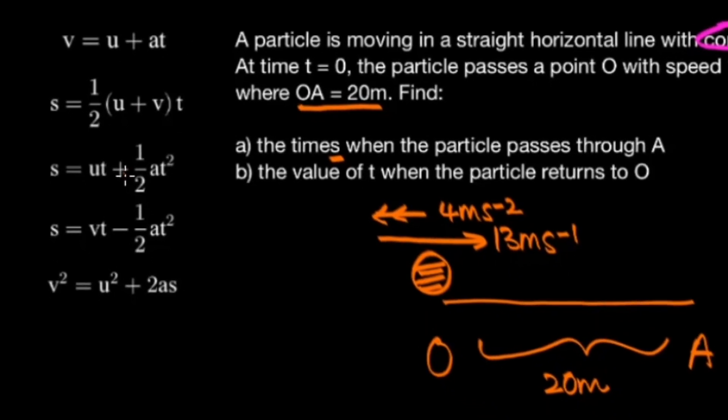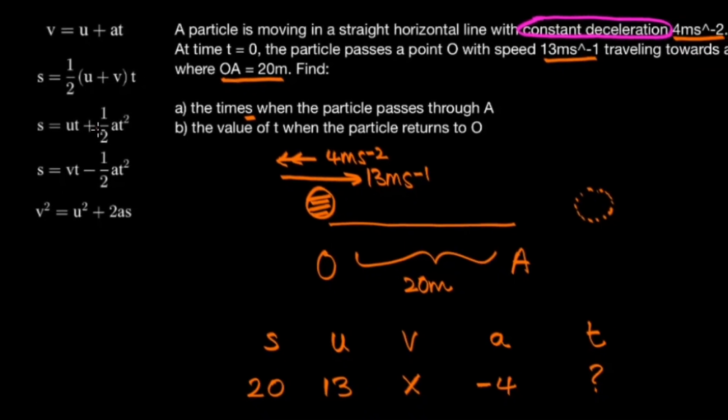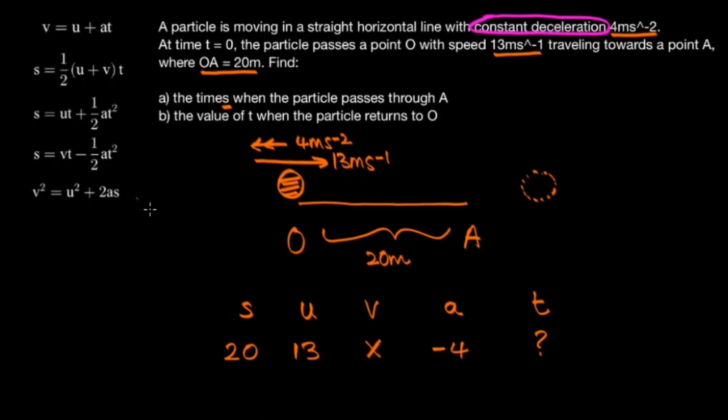And the way we pick the equation that we want to use is by looking at our irrelevant letter and choosing the equation in which that letter does not show up. So the letter V does not show up in the third equation, so that's the equation that we're going to be using.